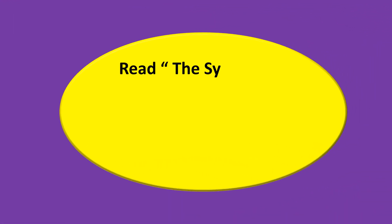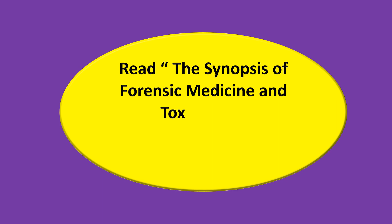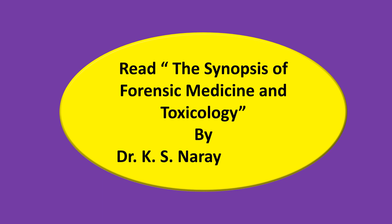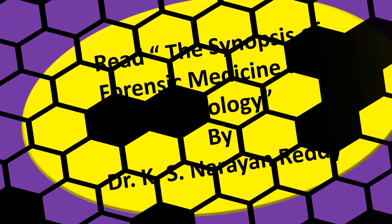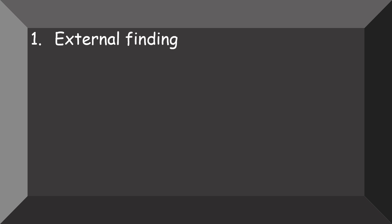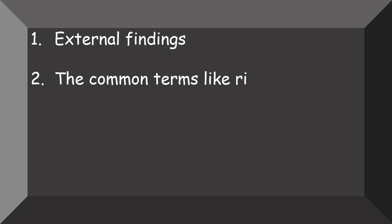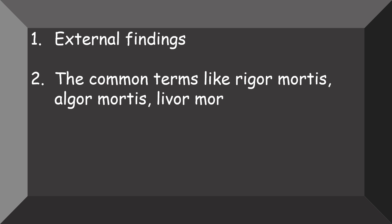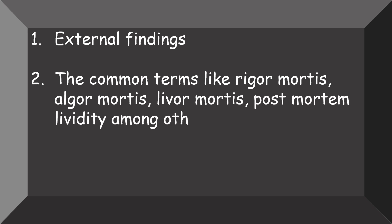So which book to read? The first book to read is the Synopsis of Forensic Medicine and Toxicology by Dr. K.S. Narayan Reddy. From this book, note the external findings, common terms, and definitions like rigor mortis, algor mortis, livor mortis, and others, as well as how to determine the time since death using these signs.